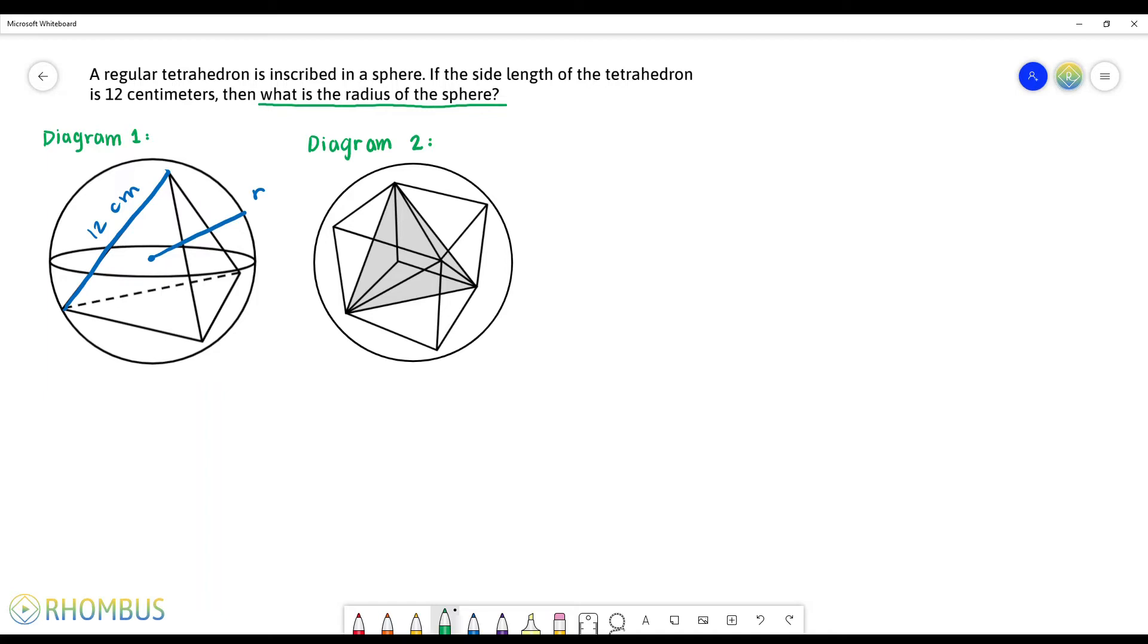And also because the tetrahedron's vertices all touch one of the cube's vertices as well. If you search it up, you'll also find another image of what I'm trying to describe here with a cube and a tetrahedron.